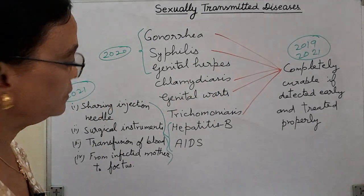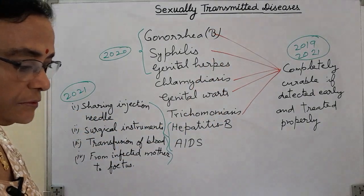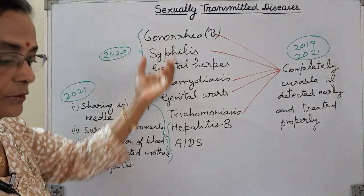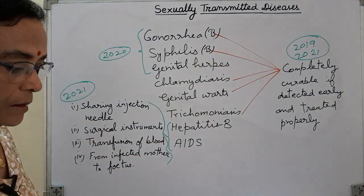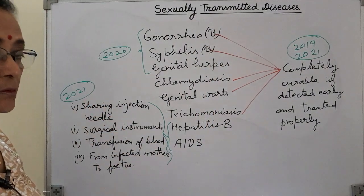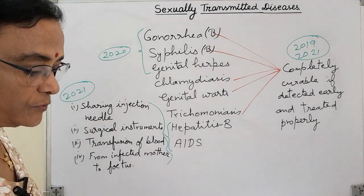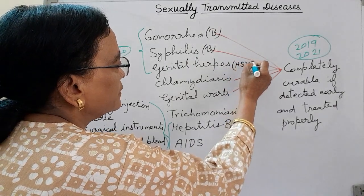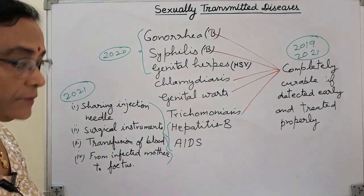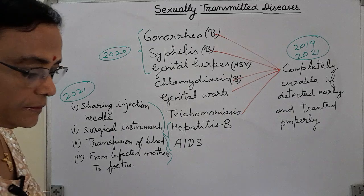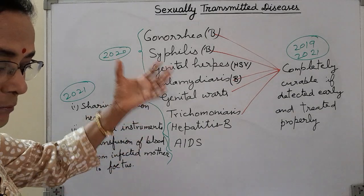Gonorrhea is a completely curable bacterial infection affecting males and females — it can infect the urethra, rectum, or throat. Syphilis is also a bacterial infection that starts with painless sores on the genital organs or in the mouth. Chlamydia is a bacterial infection where, in the beginning, there are no symptoms, but if untreated, it leads to many serious complications.